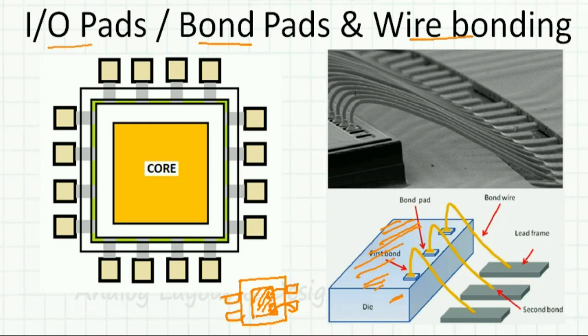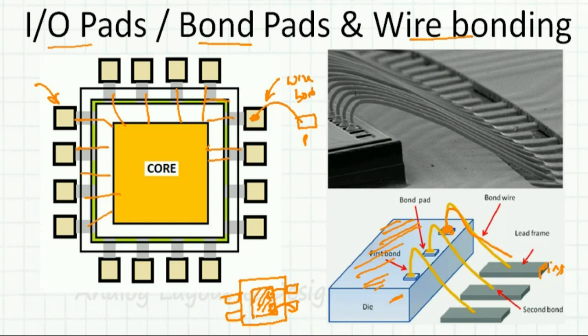These are the pins, also called the lead frame. These are the pads on which a solder ball will sit, and then a bond wire connects it to the external world. The bond pads are all on the periphery. They connect to the core, where there are some circuitries we will discuss. From the core it connects through the wire bond to the external pin.